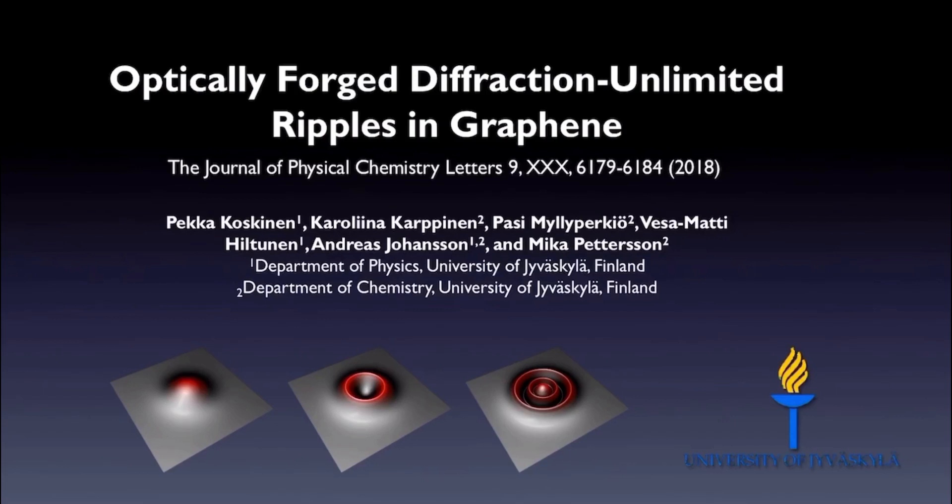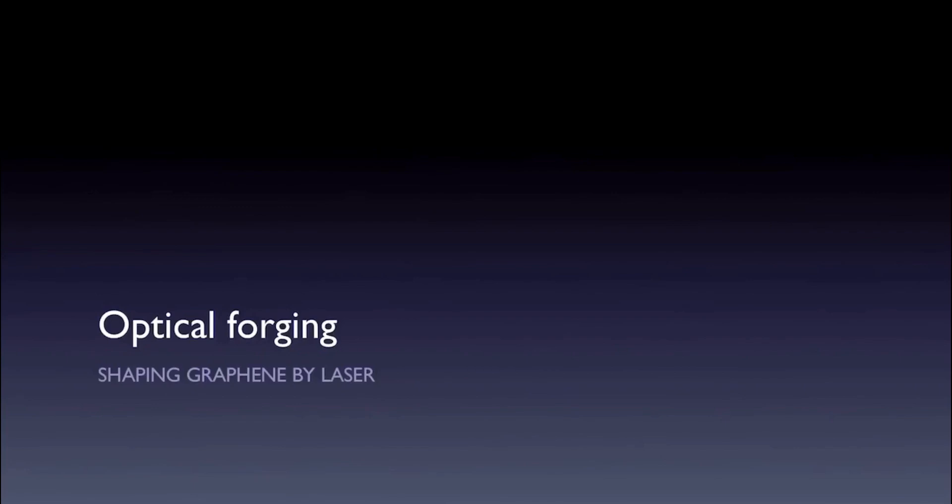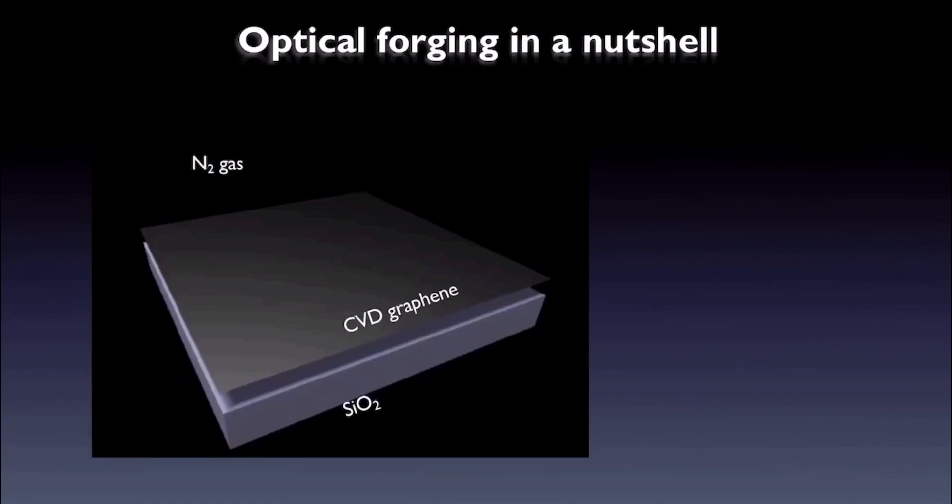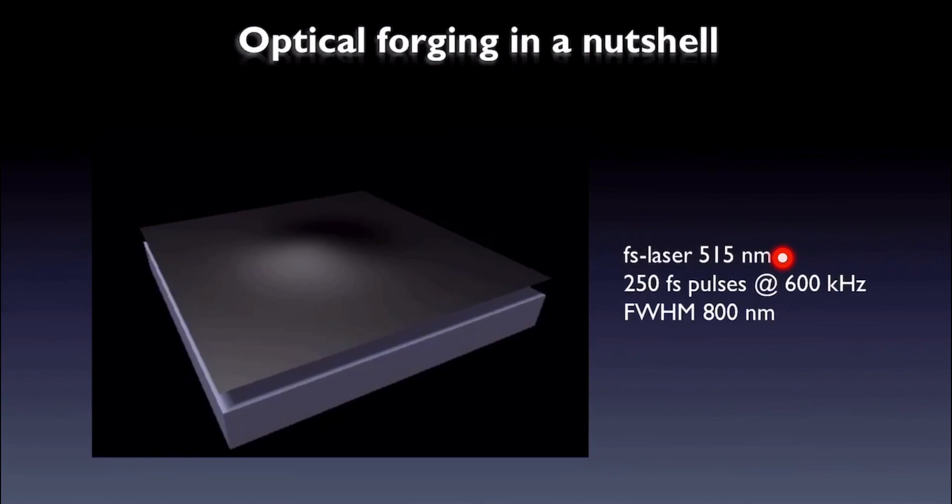Let me begin by presenting very briefly the technique of optical forging itself. In optical forging, we have CVD-grown graphene on silica placed in an inert atmosphere such as N2 gas. When we irradiate graphene with sub-micron diameter femtosecond laser pulses at high repetition rate, we end up creating blisters in graphene.